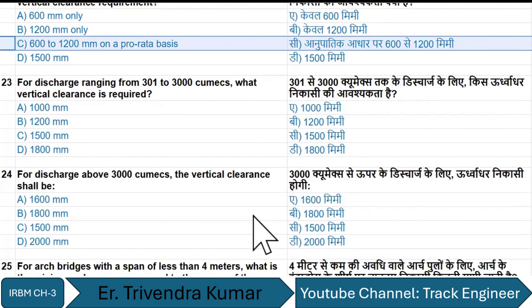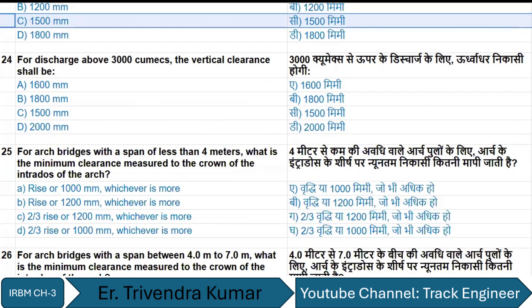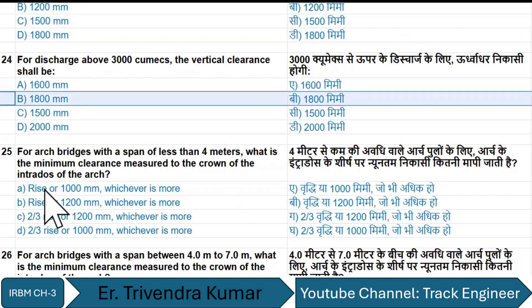For a discharge ranging from 301 to 3,000 cumecs, the vertical clearance required is 1,500 millimeters. For a discharge above 3,000 cumecs, the vertical clearance is option B.